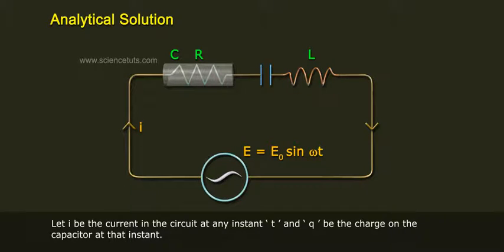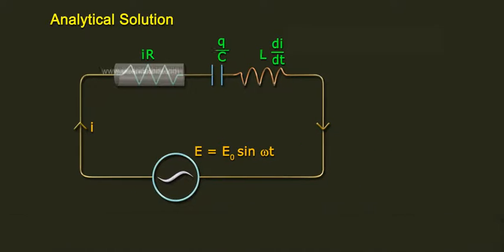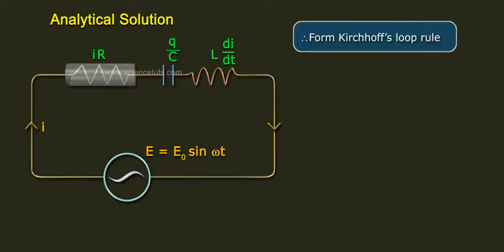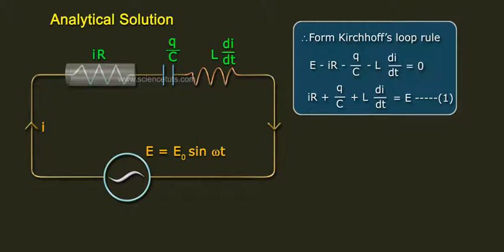Let Q be the charge on the capacitor at instant t. The potential difference across the capacitor is Q/C. The back EMF due to self-inductance L is L·dI/dt, and the potential difference across resistor R is IR. Applying Kirchhoff's Loop Rule: E − IR − Q/C − L·dI/dt = 0, which gives IR + Q/C + L·dI/dt = E. This is Equation 1.